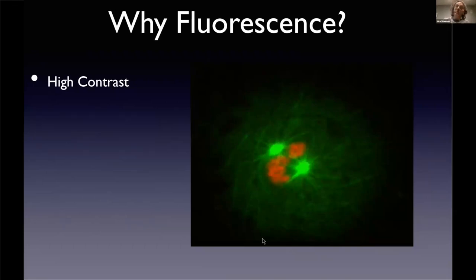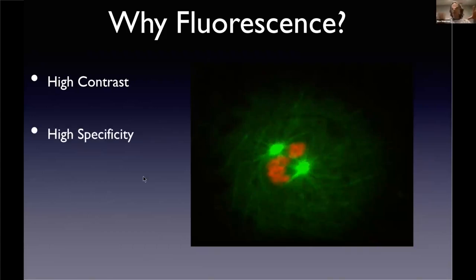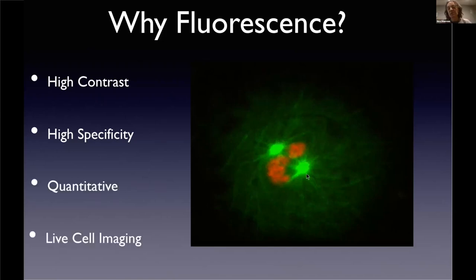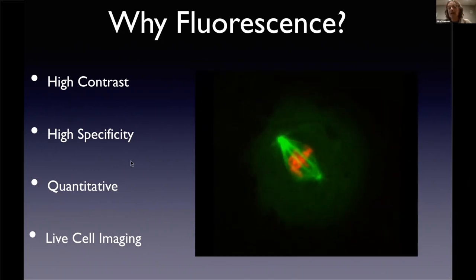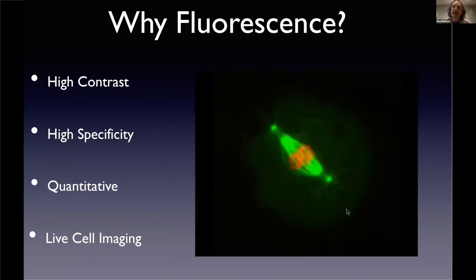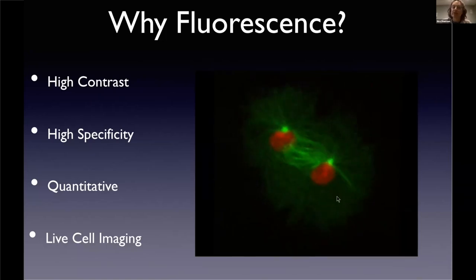Fluorescence gives you high contrast almost for free. You can make it very specific — you can label very specific molecules in your cell and only see those and not others. It can be highly quantitative, so you can calibrate the system such that twice as much signal really means twice the number of molecules. And what I really love is that it is live cell compatible — this image of chromosomes in red and microtubules in green is actually just a still from a movie of a dividing cell forming a metaphase spindle and going all the way through to two daughter nuclei.